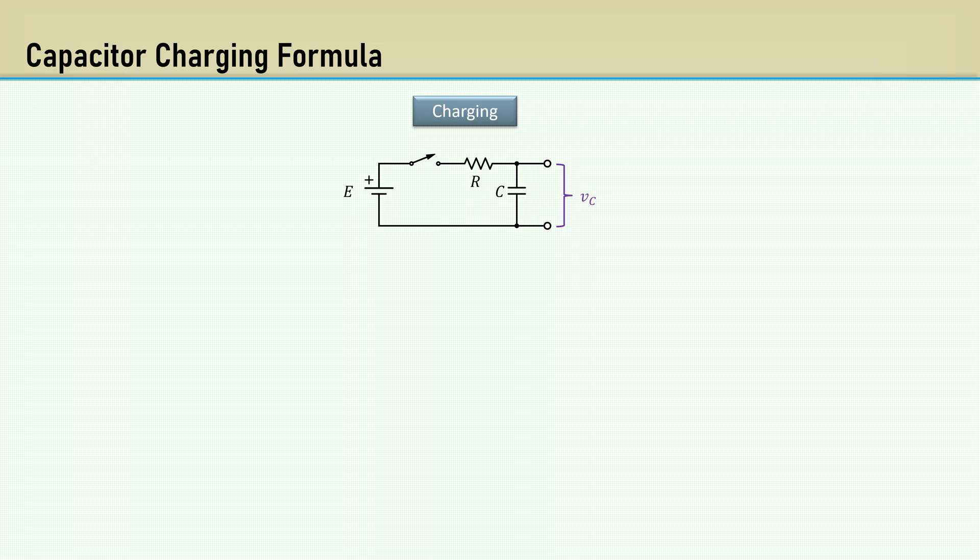Here is a schematic with a battery E switched on to charge a capacitor through a resistor. A time constant, RC, is represented by tau. And here is the equation for the capacitor voltage as a function of time.